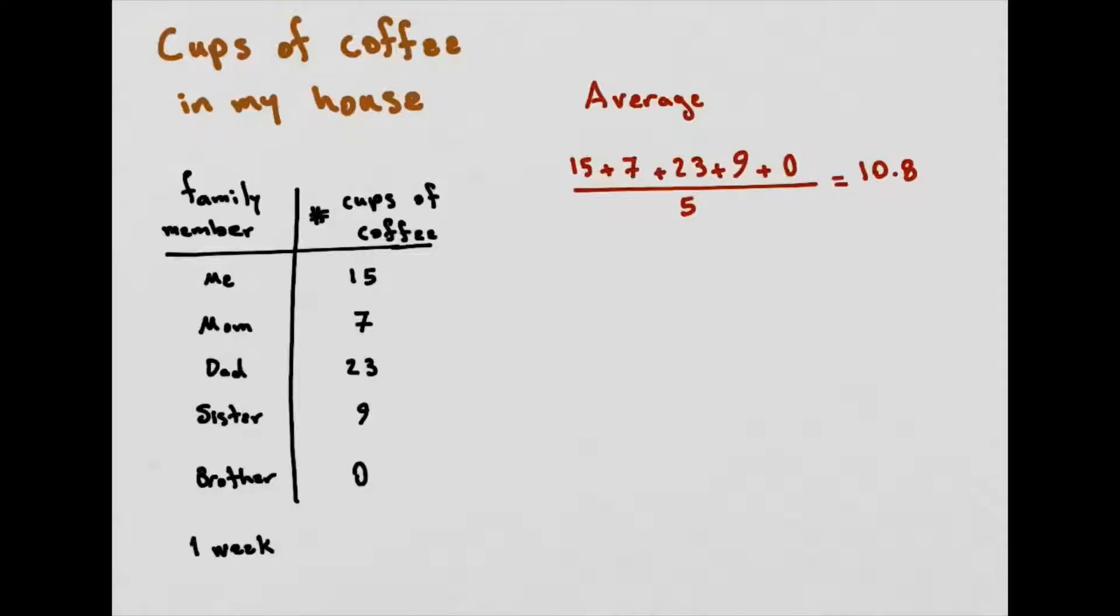But what does the average really tell me? It means if everyone was having the same number of coffee cups, they would be having 10.8. It does not, however, tell me that anyone is actually having that many coffee cups. 15, 7, 23, 9. There's no number that's close to 11 actually. So I need some extra tools to interpret this better.